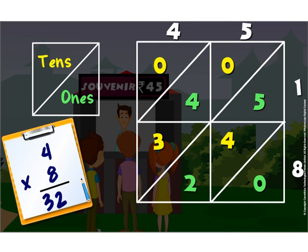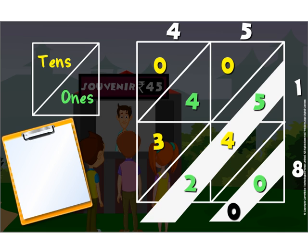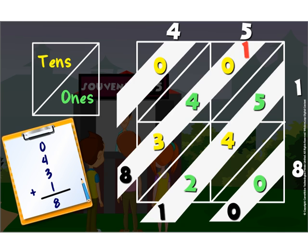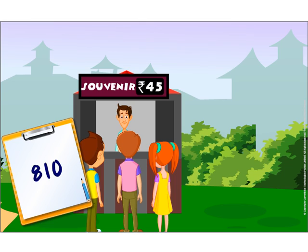Now we have to add across the diagonals. We start from this side. Since 0 is the only number here, we write 0 below. Across the next diagonal, we add 5 plus 4 plus 2, which is 11. We write 1 down and carry forward 1 to the next diagonal. Moving to the next diagonal, 0 plus 4 plus 3 plus 1 is 8. And in the last diagonal, we have a 0. We read the numbers across the L formed to get the answer, which in this case is 810. So the kids have to pay Rs. 810 for the souvenirs.